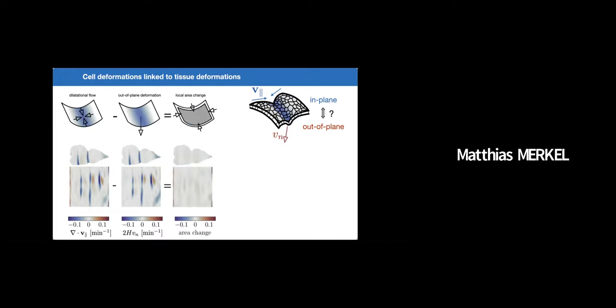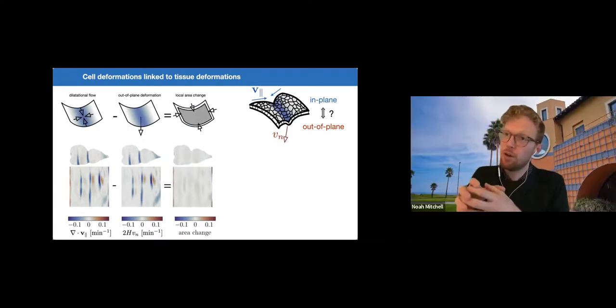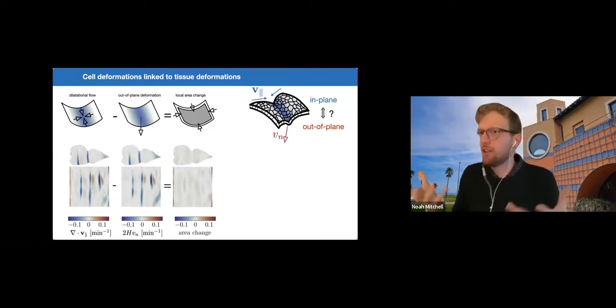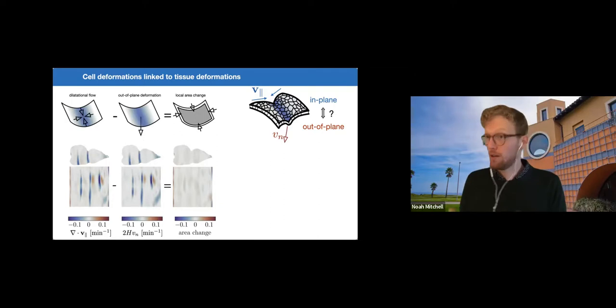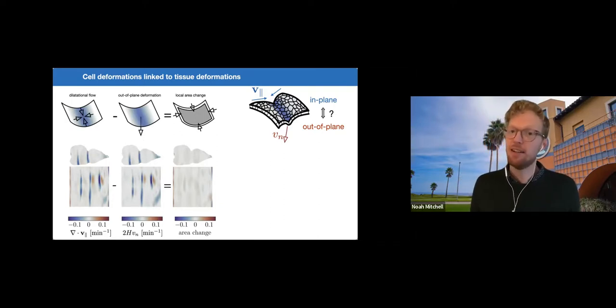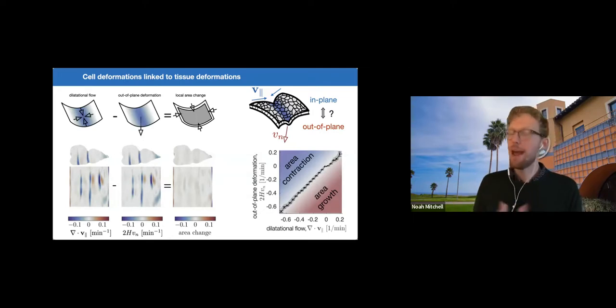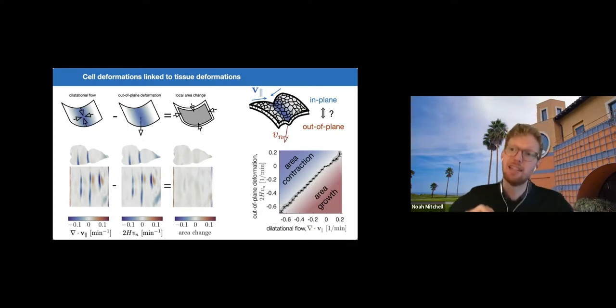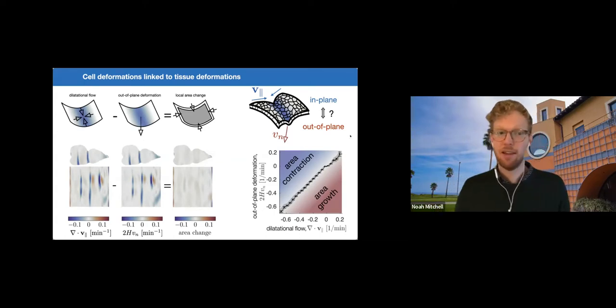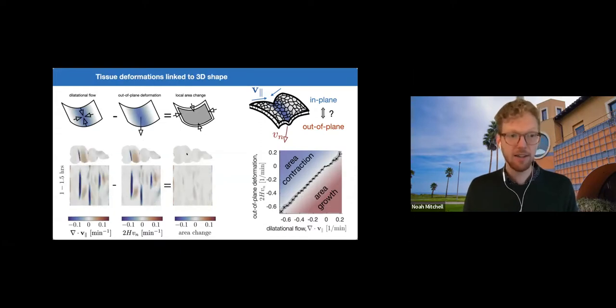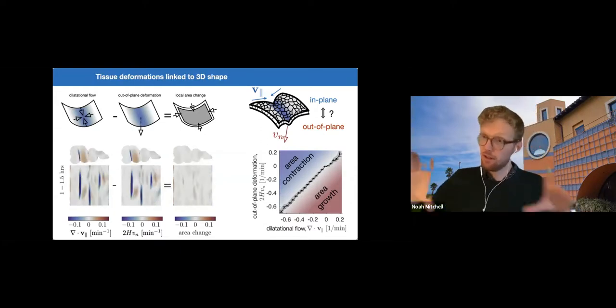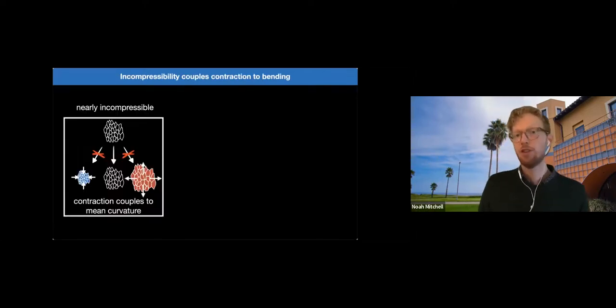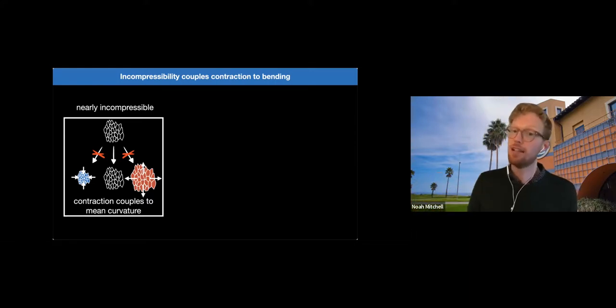Now, the difference between these two fields physically corresponds to local changes in area of the tissue or cell area change. And this difference is small compared to either. So that means that the in-plane and the out-of-plane motion are matched with something like 97-98 percent correlation, and this signals an effective tissue incompressibility, 2D incompressibility of the tissue during this development. This is true at early times, as shown in the snapshots here. This is also true at late times, in the snapshots here, once the constrictions are already quite deep. So the tissue behaves as a nearly incompressible tissue, meaning that almost all dilatational flow couples directly to changes in curvature.